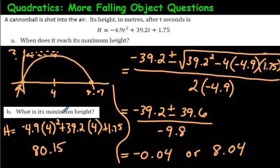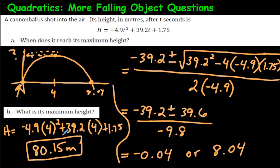The maximum height of the cannonball is 80.15 meters, and it happened four seconds after launch. I'd recommend punching this equation into Desmos to verify everything visually — it's a fantastic free app. Sorry the numbers didn't work out beautifully, but in real life that's often how it goes. Thank you everyone for listening, and have a great day!